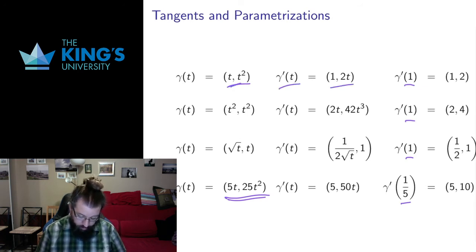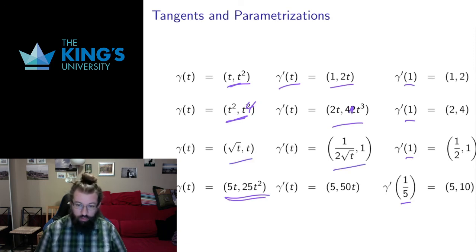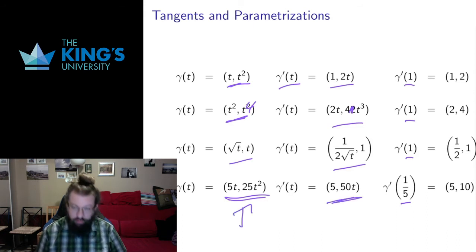The derivative of t t squared is one two t. Derivative of t squared t to the four is two t four t cubed. Derivative of square root t t is one over root t one. So forth and so on. Each of these derivatives are derivatives of a reparametrization of the same thing.